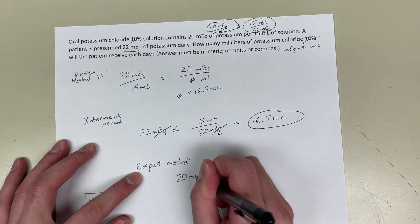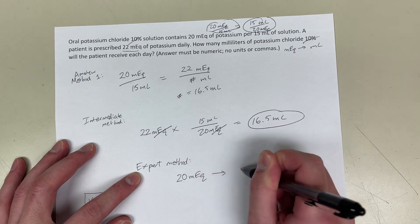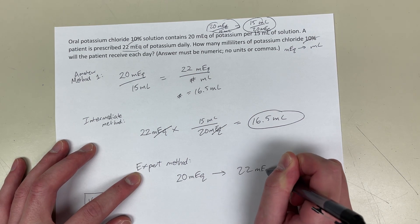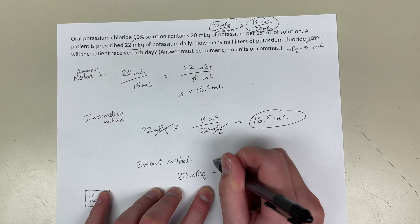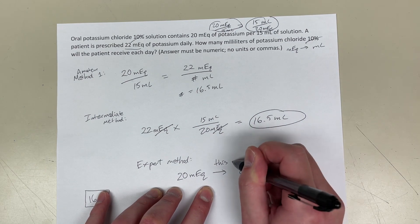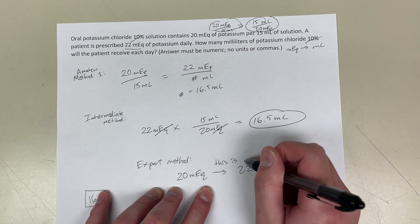So, 20 milliequivalents, we're trying to convert that to 22 milliequivalents. And someone good at math will notice this is 10% more. 22 is 10% more than 20.